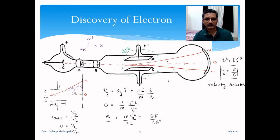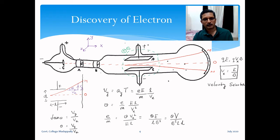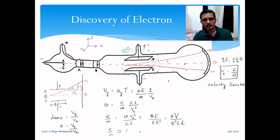We can further substitute E = V/d (potential difference V divided by plate separation d), giving the final expression: e/m = θ · V / (B² · l · d). Here θ can be measured from the geometry; V is the applied voltage; B is the applied magnetic field; l is the plate length; d is the plate separation — all measurable or known. Using this, Thomson measured the charge-to-mass ratio and obtained approximately 1 × 10¹¹ coulombs per kilogram.